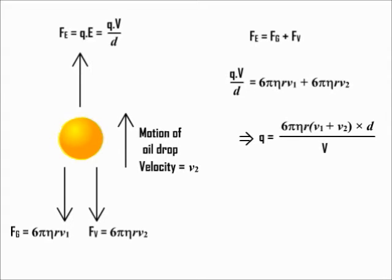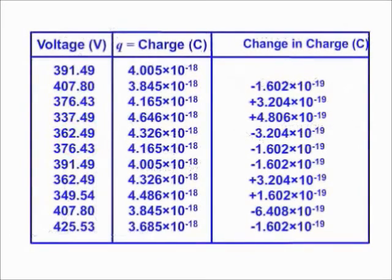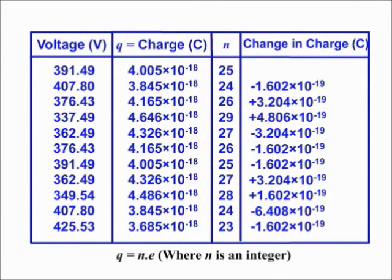The charge on different oil drops was calculated. Now Millikan prepared a chart like this. The chart showed the charges he got on the oil drops and he found the difference between two charges like this. It was noted that the charge on an oil drop is always an integral multiple of a minimum charge and the minimum charge was found to be 1.602 × 10⁻¹⁹ Coulomb.